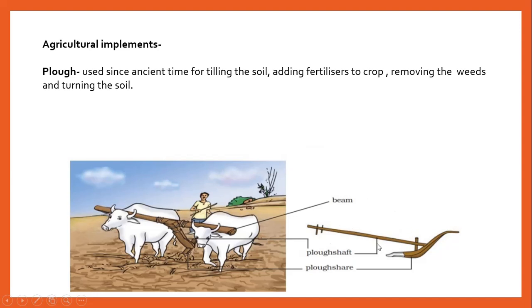For plowing, a tool called the plow is used. It is generally made up of wood and is drawn by a pair of bullocks. As you can see in the figure, it contains a triangular iron strip called a plowshare. The main part of the plow is a long piece of wood called the plowshaft. There is a handle at one end of the shaft, and the other end is attached to a beam placed at the neck of the bullocks.